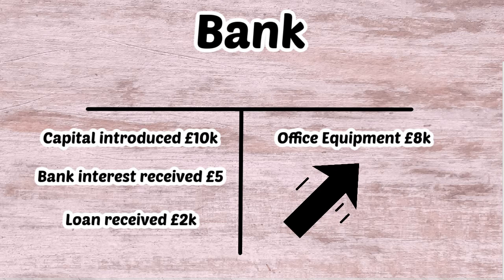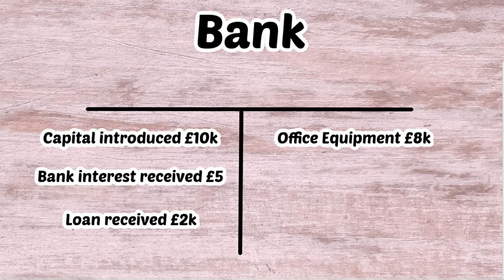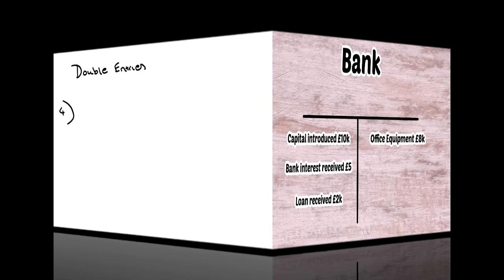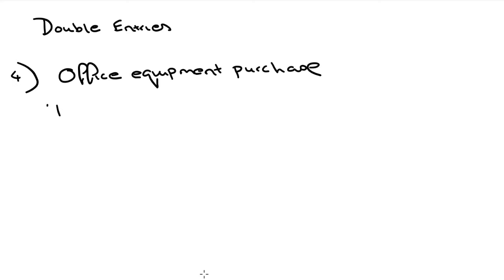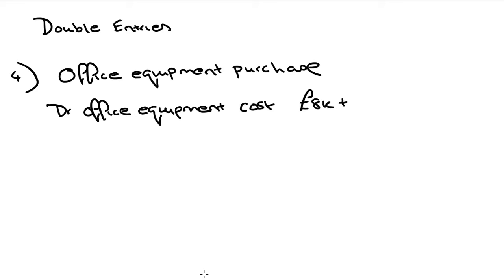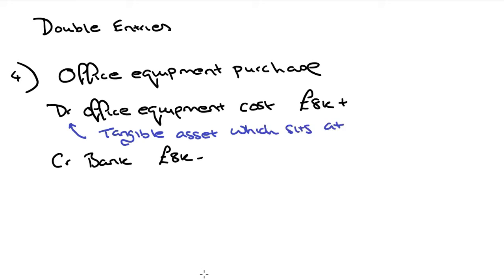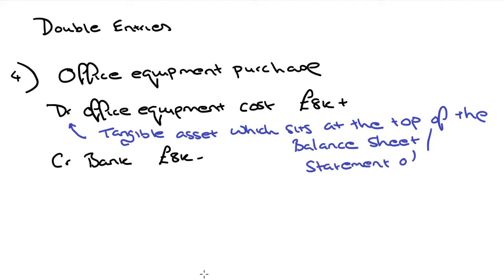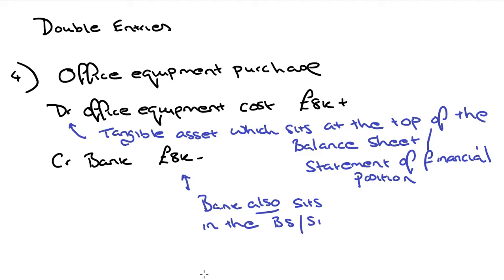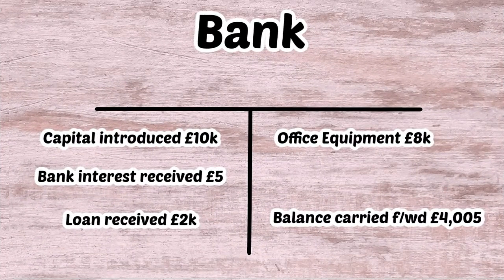Now we purchase office equipment for £8,000. This appears on the right of the T account because we're reducing the bank balance to pay for it. The double entries are: debit office equipment — a tangible asset now sitting on our statement of financial position — and credit bank £8,000. Tangible assets are physical items you can touch and they sit at the top of the statement of financial position.